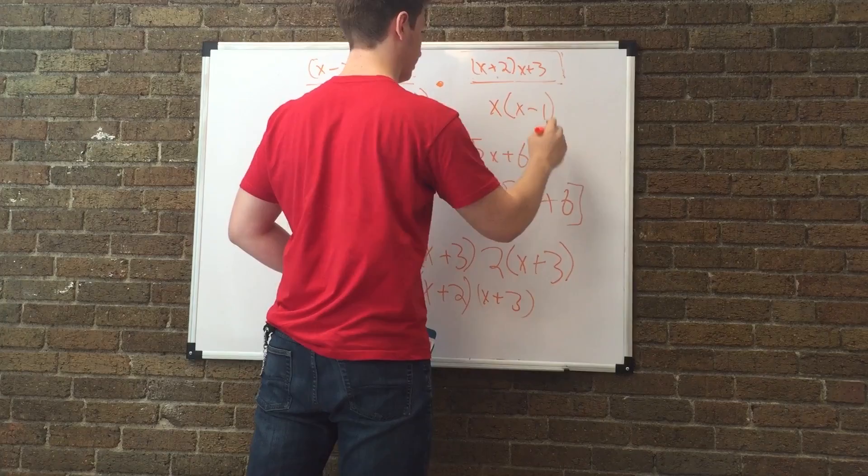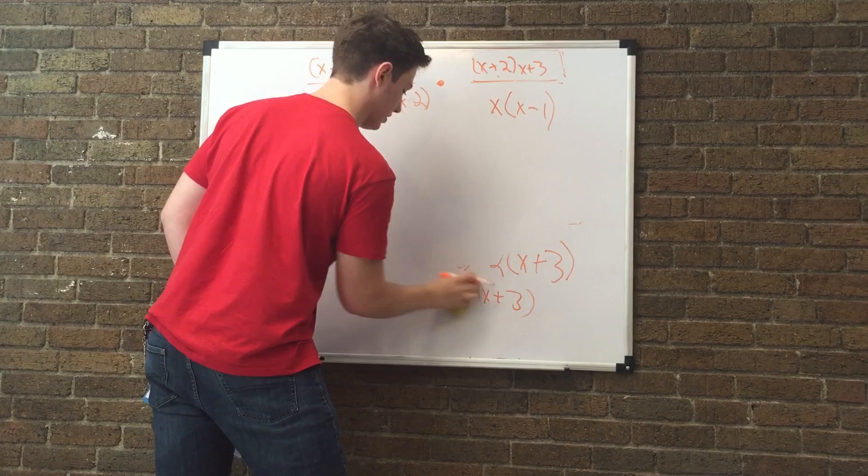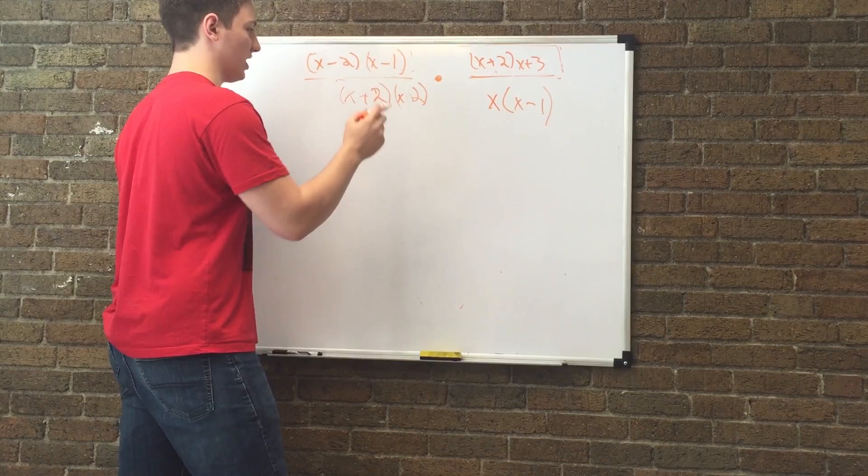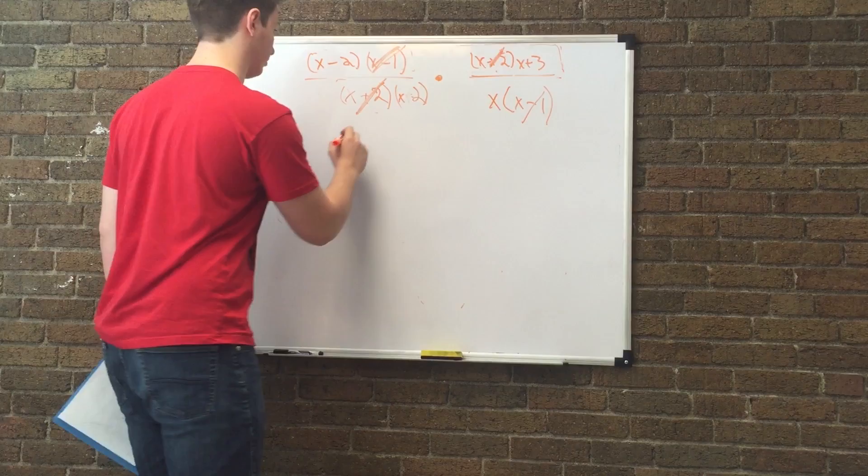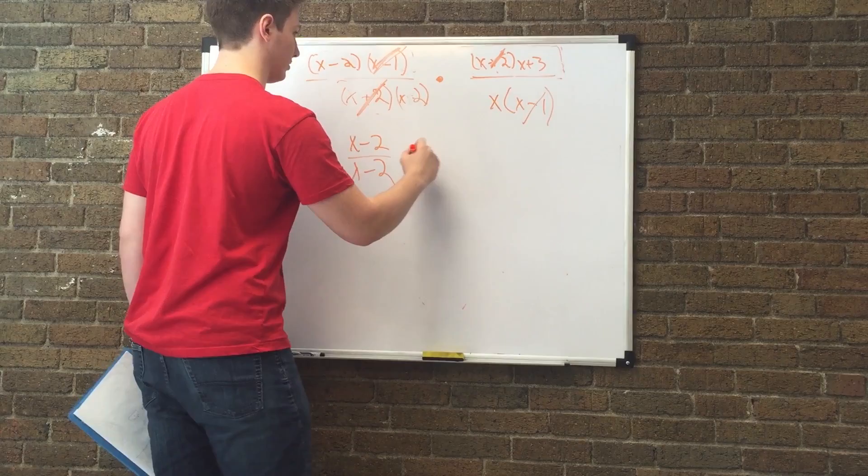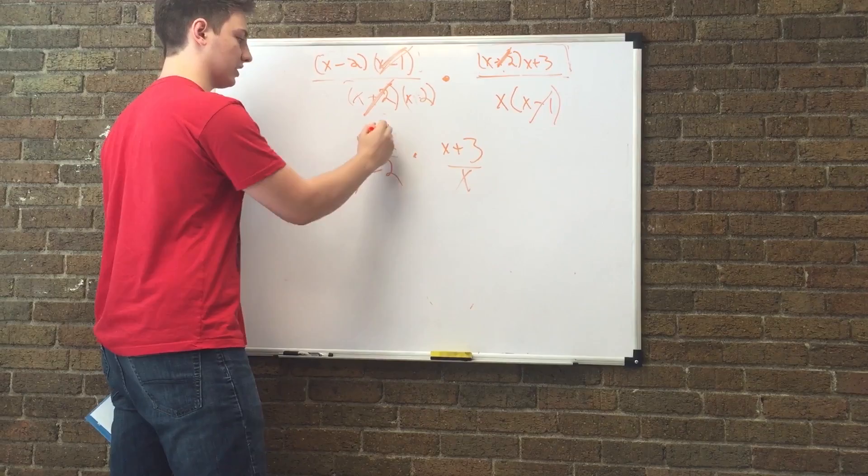And completely eliminate everything. So you take x minus 2, x plus 2. You cancel that out with this x plus 2. This x minus 1 can cancel out with this x minus 1. And that's all you can cancel out. So x minus 2, x minus 2. Times x plus 3 over x. These are the same thing. So you can take these out too. And this is going to be your final answer. x plus 3 over x.